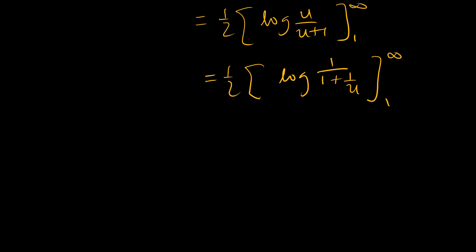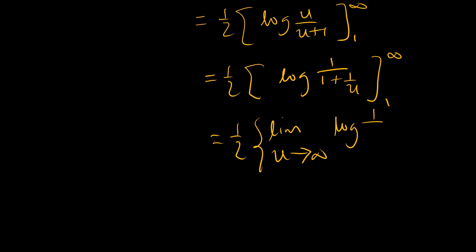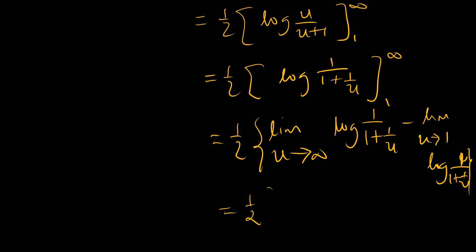This gives us one-half times the limit as u tends to infinity of ln(1 over (1 plus 1/u)), minus the limit as u tends to 1 of ln(1 over (1 plus 1/u)). As u tends to infinity, 1/u tends to 0, so the argument tends to 1, and ln(1) equals 0.